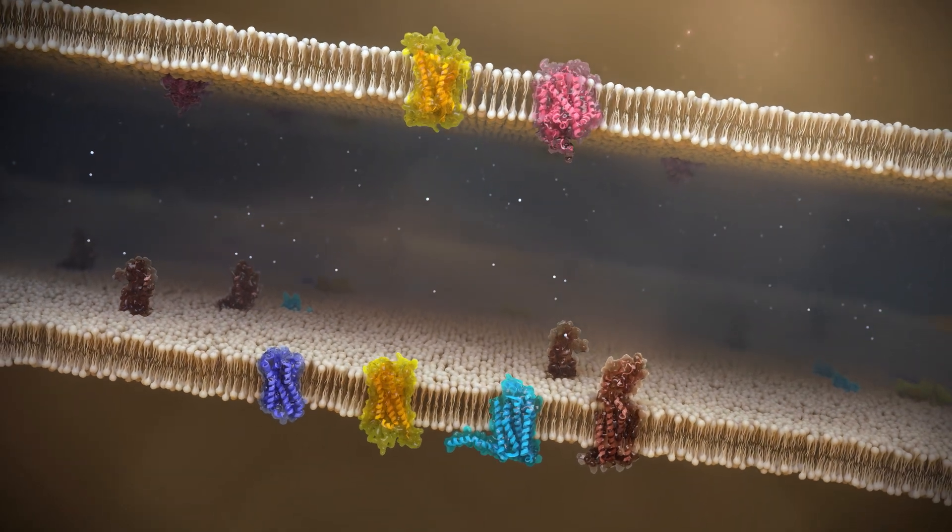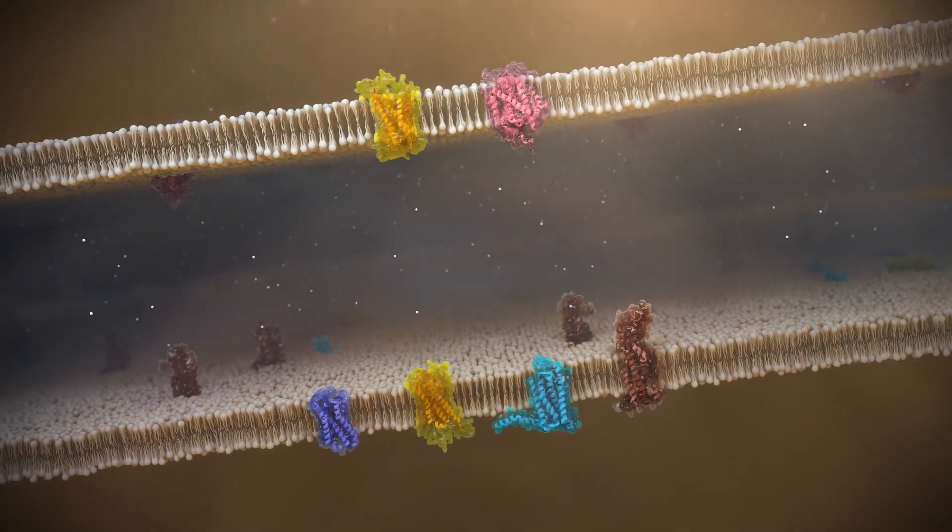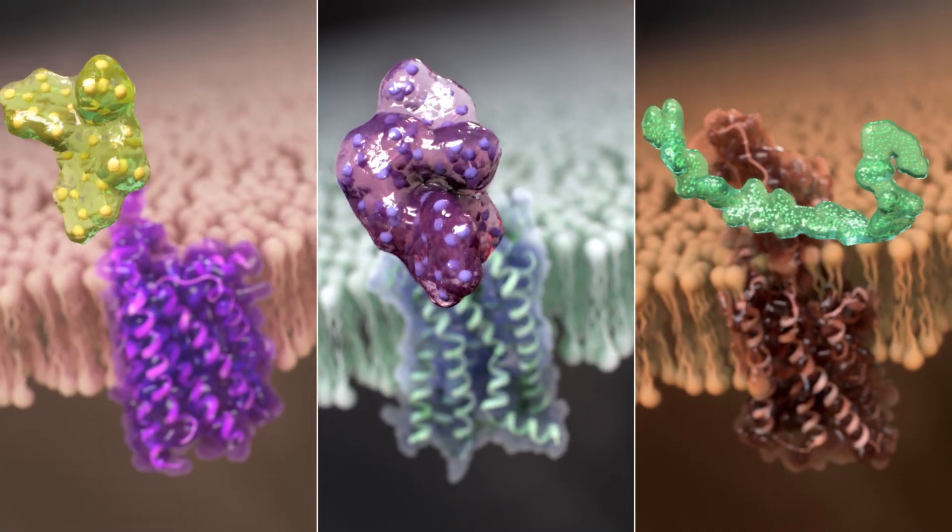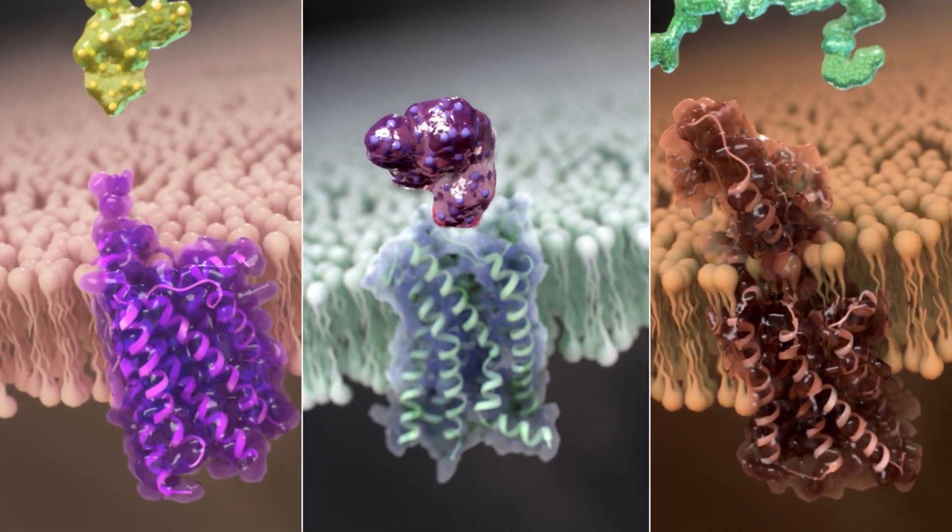GPCRs are the largest and single most important family of drug targets in the human body. 25-30% of current drugs target GPCRs, including many of the best-selling drugs.